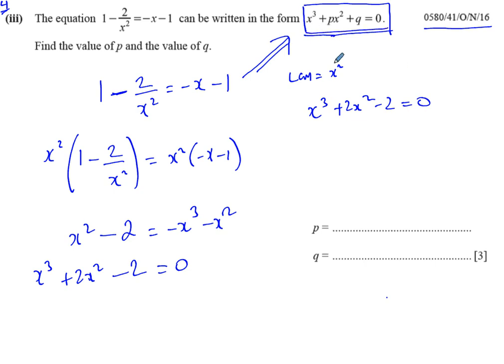In this form, you've got x cubed plus something x squared plus a constant equals 0. So we just compare the coefficients of x squared. The p and the 2 must be the same. The q and the negative 2 must be the same. And here we have our solution to this problem.